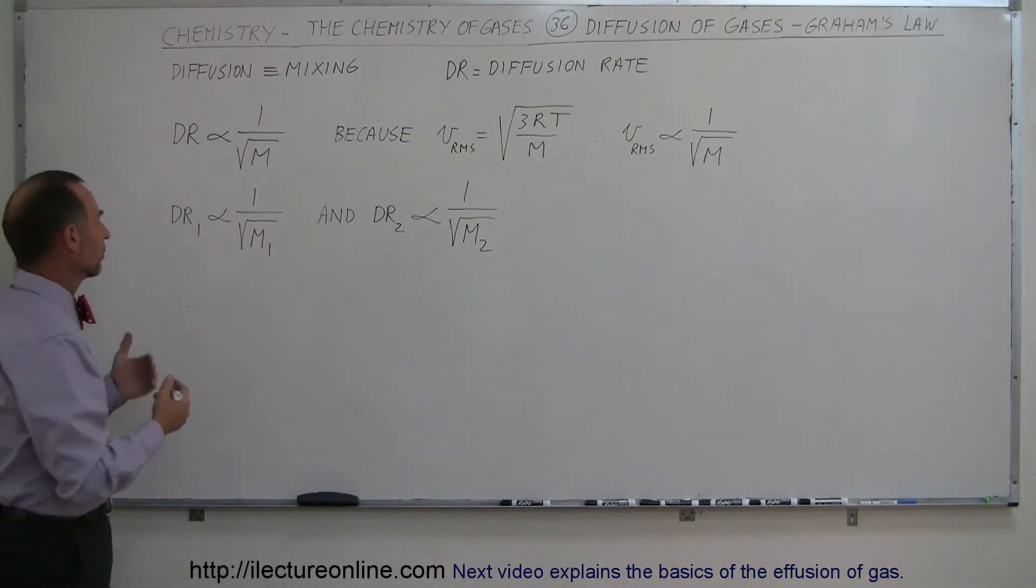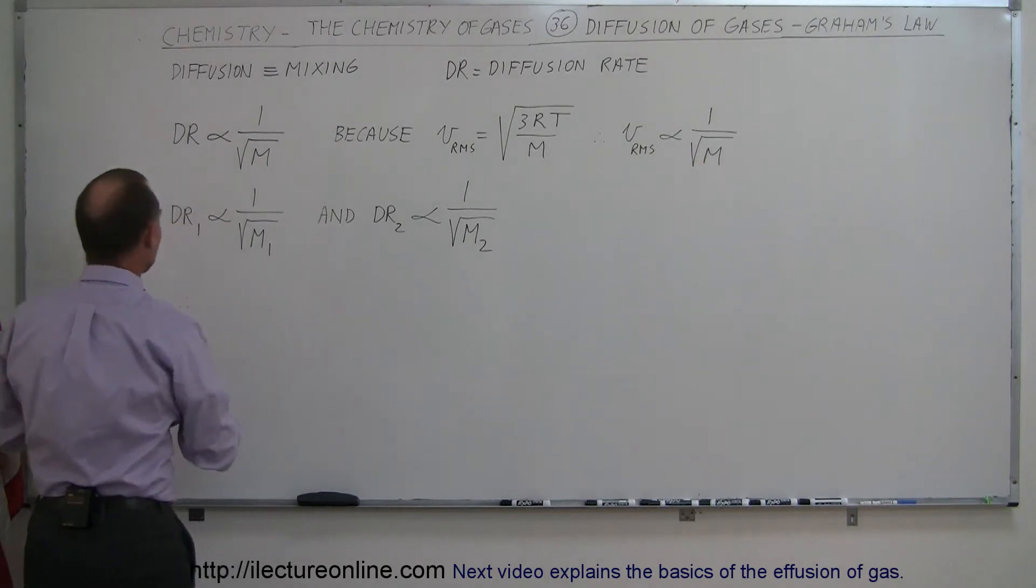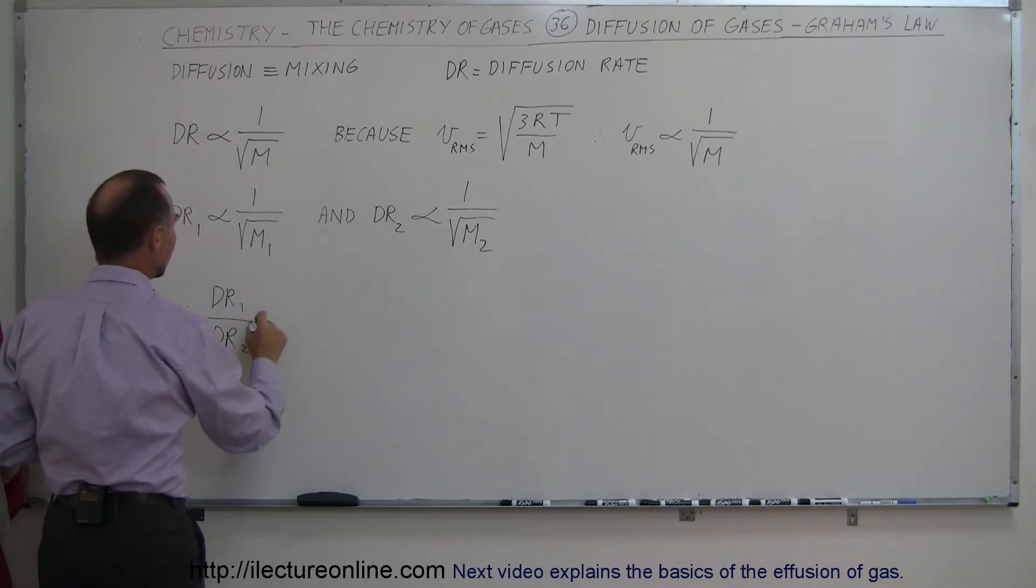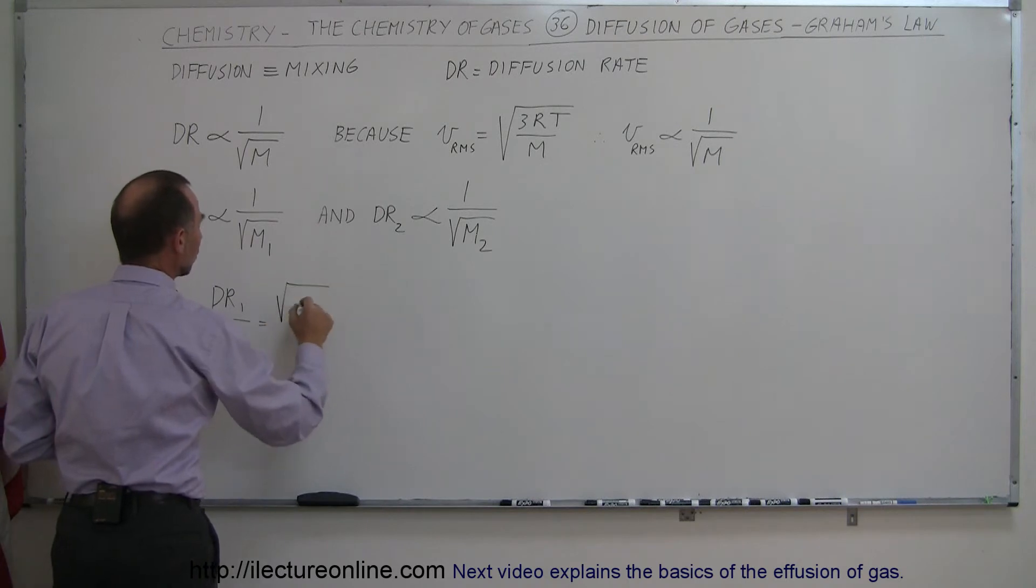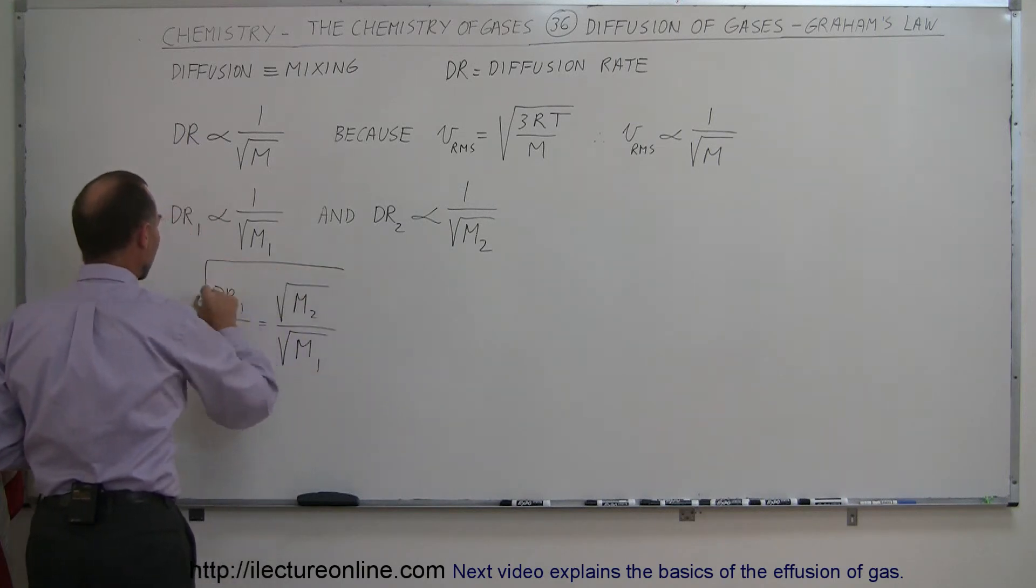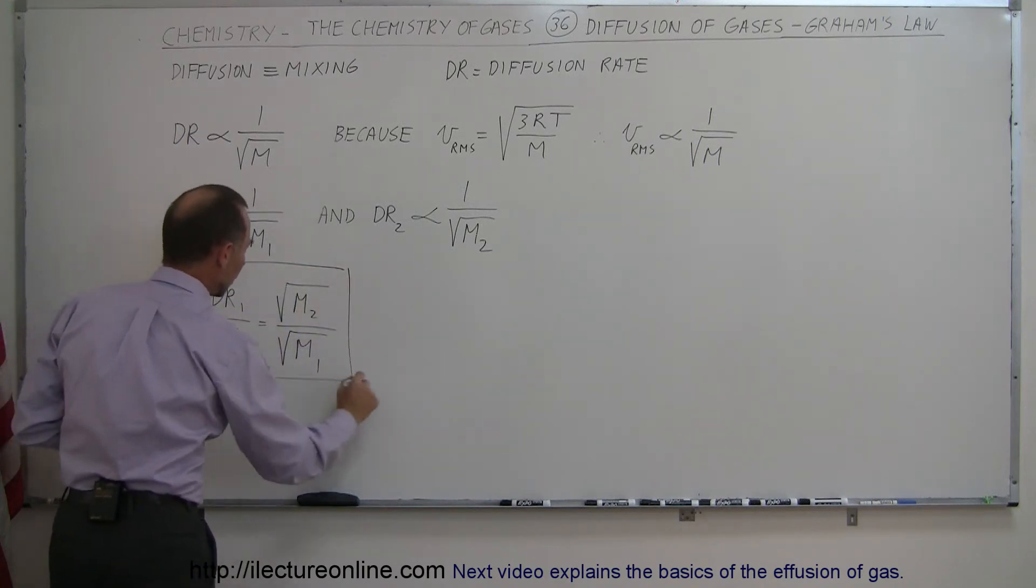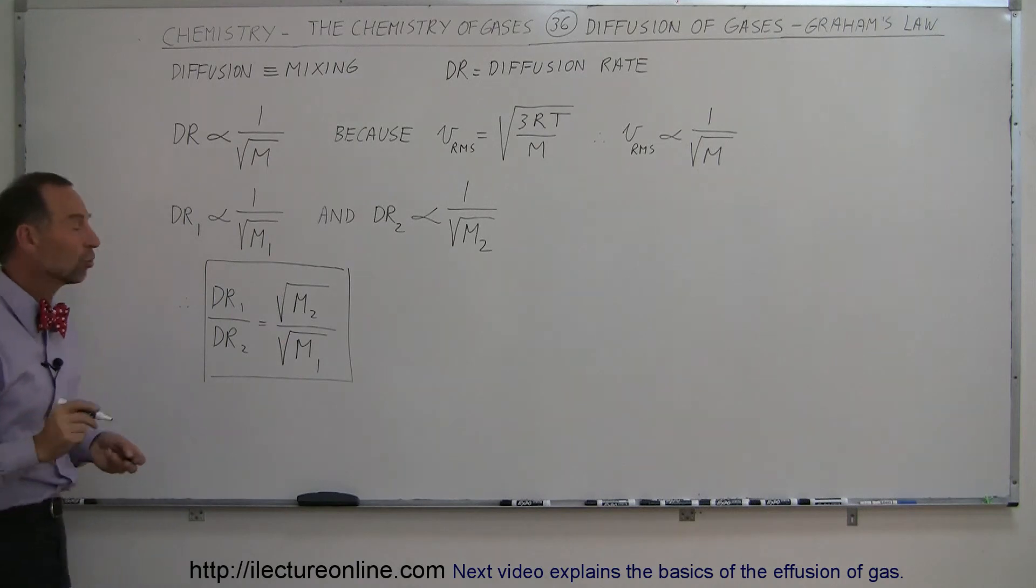If we then divide one by the other, we can then say that the ratio of DR1, the diffusion rate of gas one, divided by the diffusion rate of gas two, is equal to the square root of the molar mass of gas two, divided by the square root of the molar mass of gas one. And this then became what we now call Graham's Law.